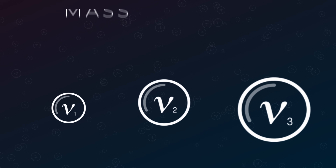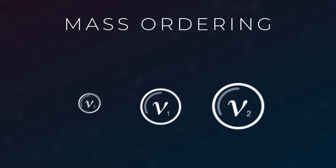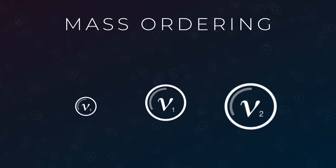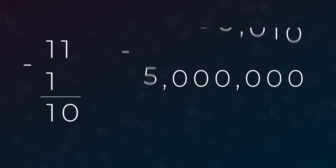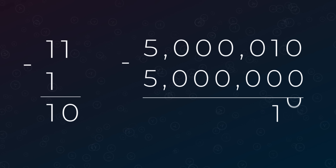Measurements of neutrino oscillations can tell us the size of delta m squared. However, that doesn't tell us which neutrino is heavier or lighter — a problem called the mass ordering. It also doesn't tell us what the masses of the neutrinos actually are. If we measure a delta m squared of 10, are we talking 1 and 11, or 5 million and 5 million and 10?